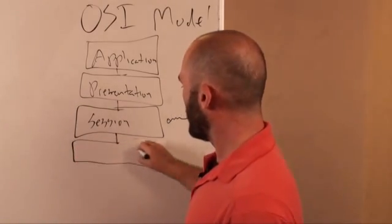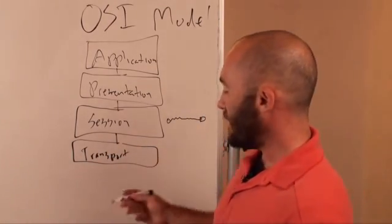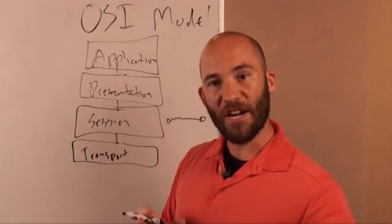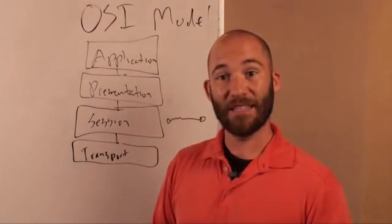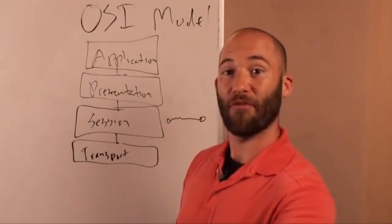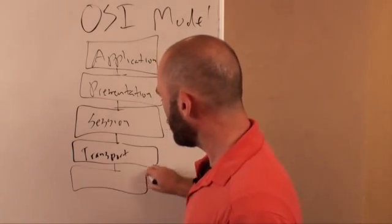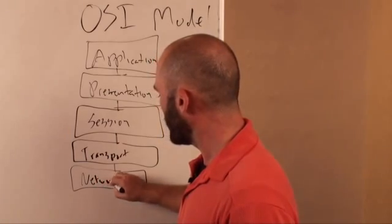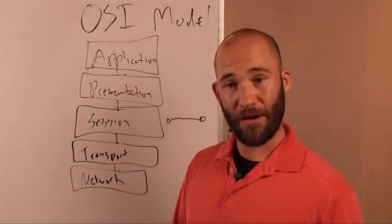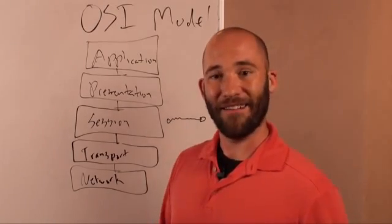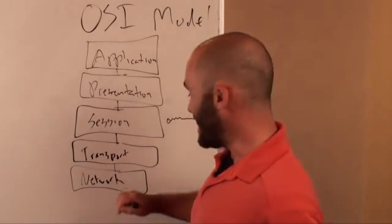Underneath that is the transport layer. This layer decides how much information should be sent at one time. When you're communicating with a website, this is the layer that decides how much information you communicate to the website and how much gets communicated back — it deals with the transport of data back and forth. Then you have the network layer. The network layer is where routers operate. Your IP address is at the network level.